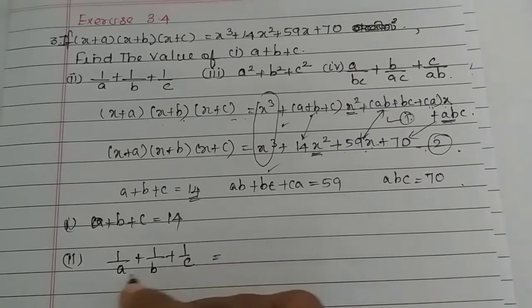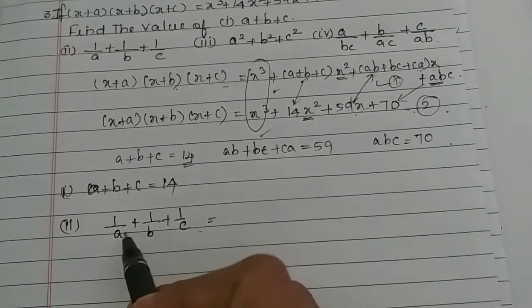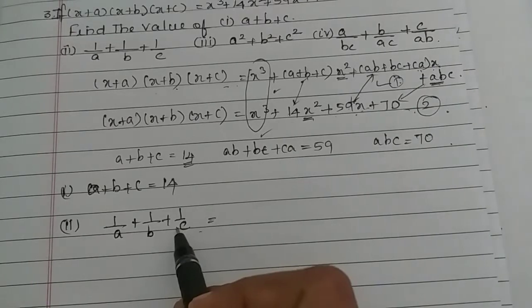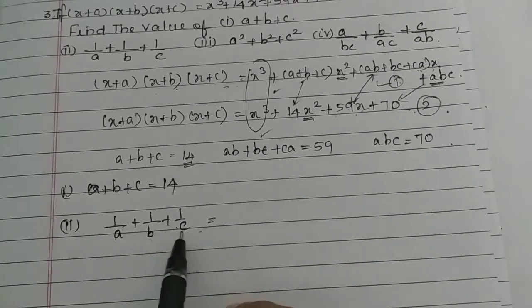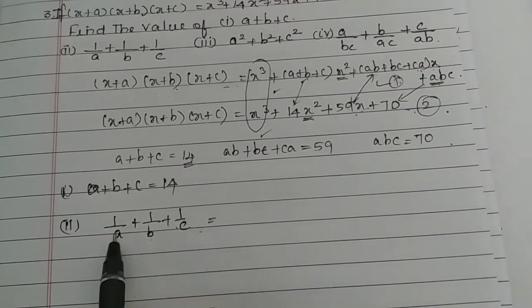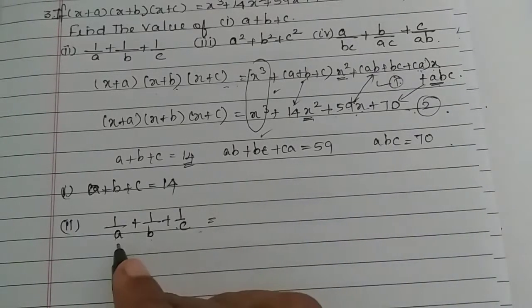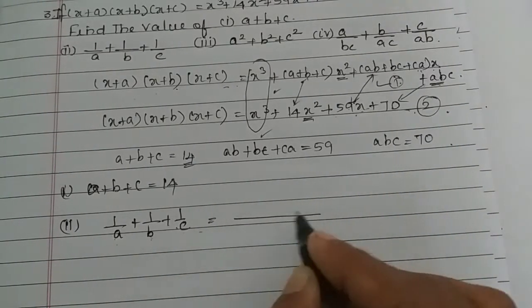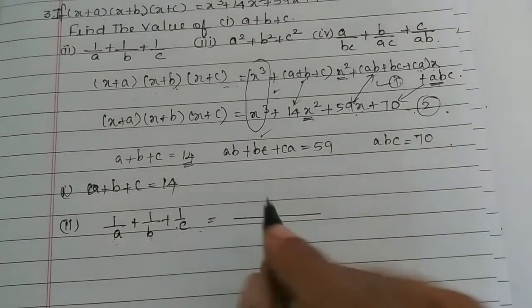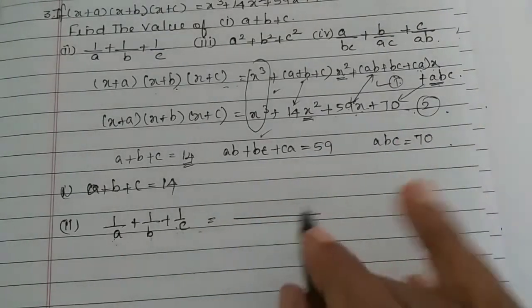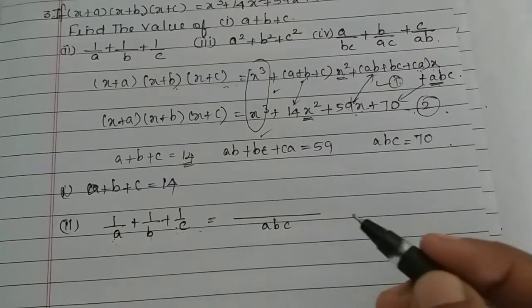Now 1/A + 1/B + 1/C is a fraction, so we need to add them using the LCM. In the denominator we have variables, so the LCM is ABC. We multiply accordingly to get a common denominator of ABC.